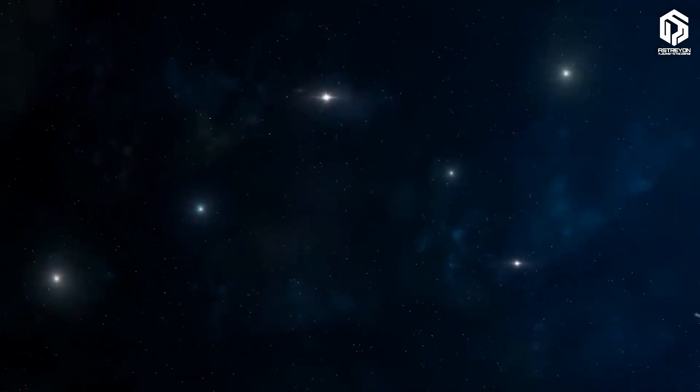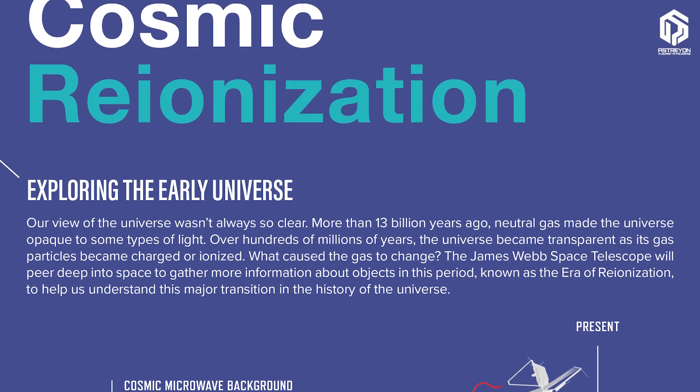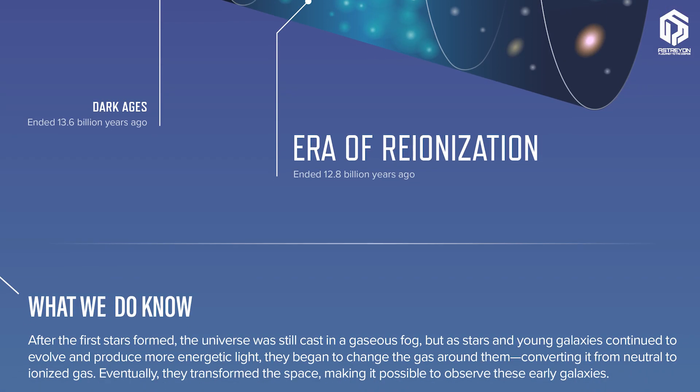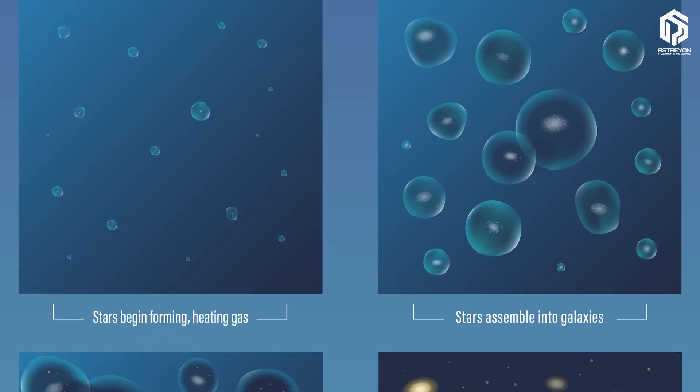It's like a lamp suddenly turning on in a foggy room and pushing the mist aside. This phenomenon is known as reionization, a process where massive stars or black holes ionize hydrogen and make the universe transparent.